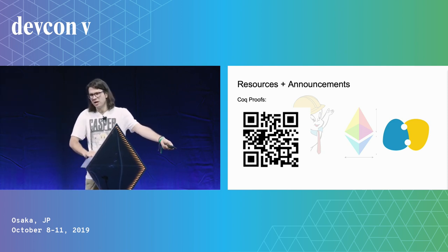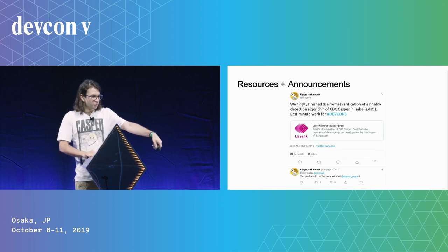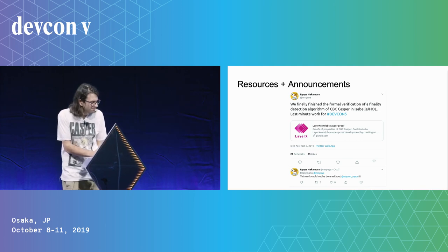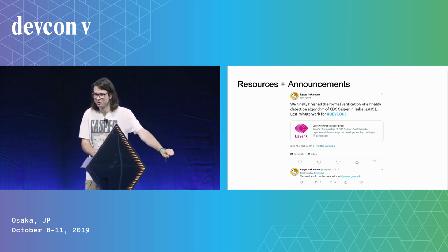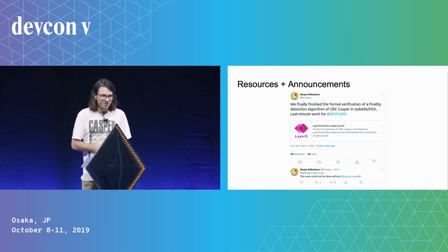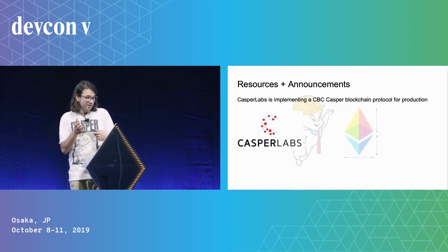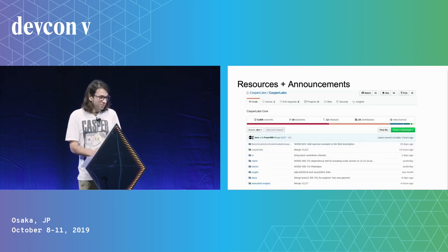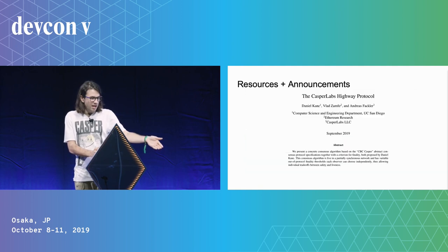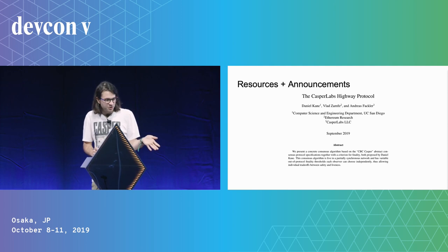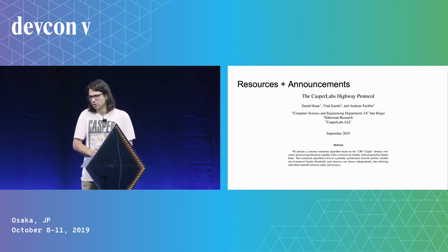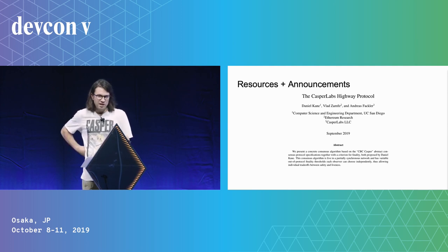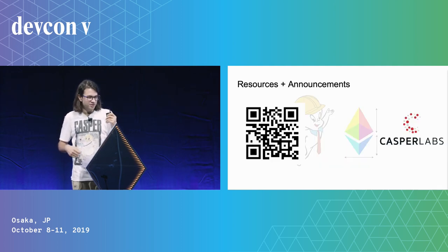Ruria Nakamura has a formal verification of the decision detector — go check him out on Twitter or talk to him after. Casper Labs is implementing a CBC-Casper blockchain for production — quite different from a research roadmap. They have an active GitHub and released a paper today giving a leader-based liveness strategy for partially synchronous networks, including the liveness strategy and finality criteria.